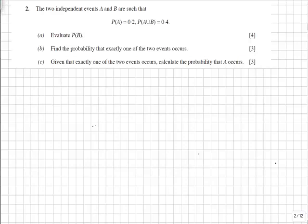Part C requires a little more thought. Given that exactly one of the two events occurs, calculate the probability that A occurs.